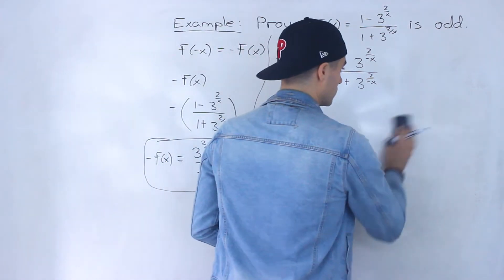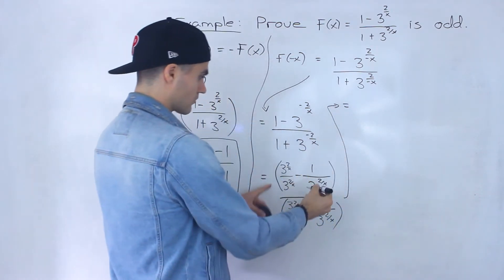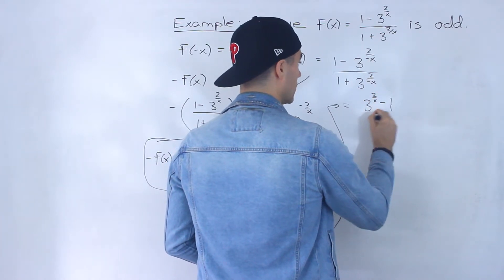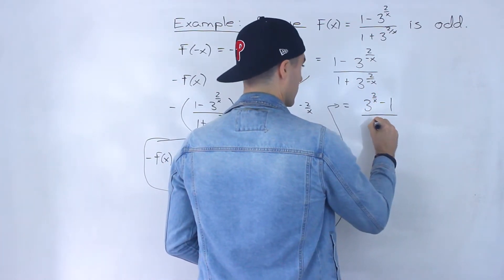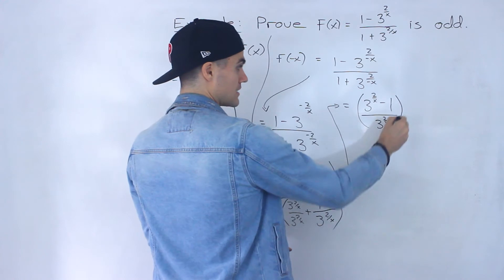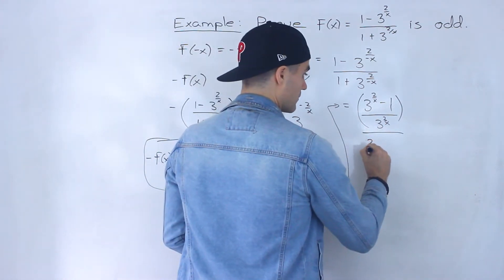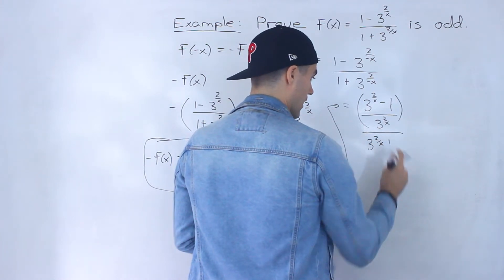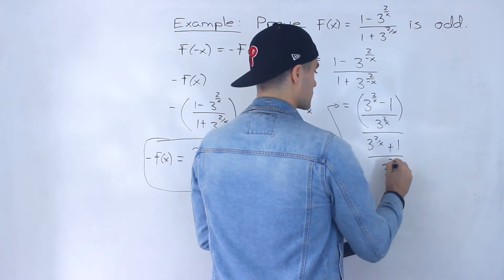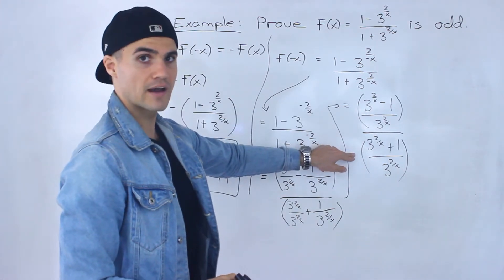We can now combine these into one fraction each. The numerator becomes (3^(2/x) - 1) / 3^(2/x), and we divide by the denominator which is (3^(2/x) + 1) / 3^(2/x). Since we're dividing fractions, we keep the first fraction and multiply by the reciprocal of the second, which is 3^(2/x) / (3^(2/x) + 1).